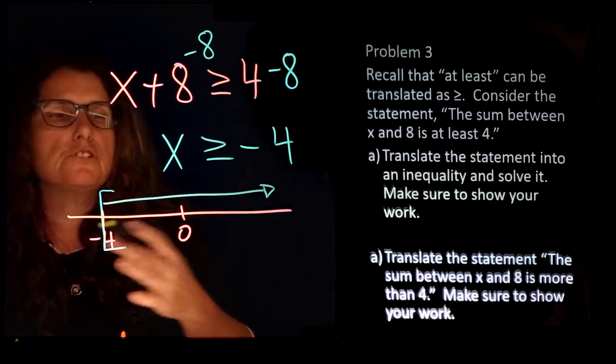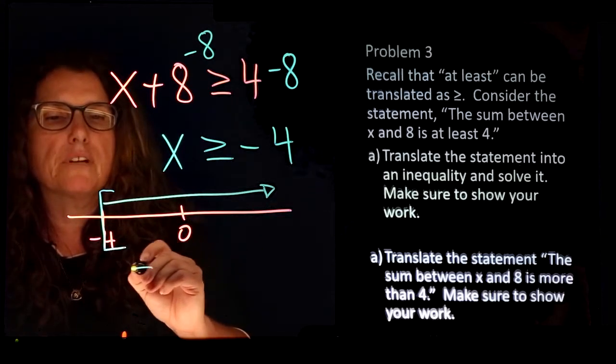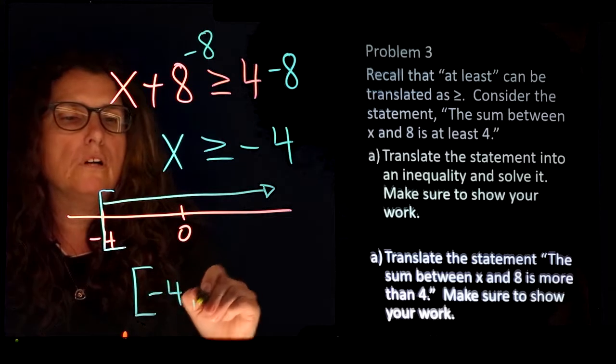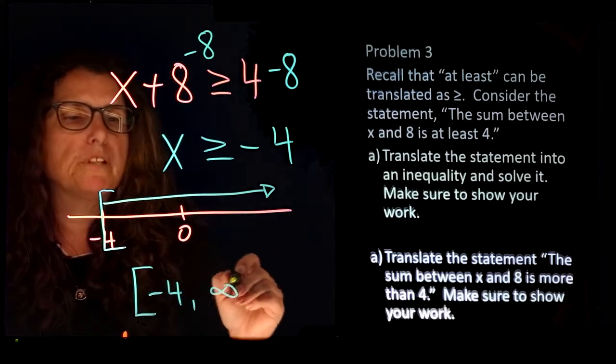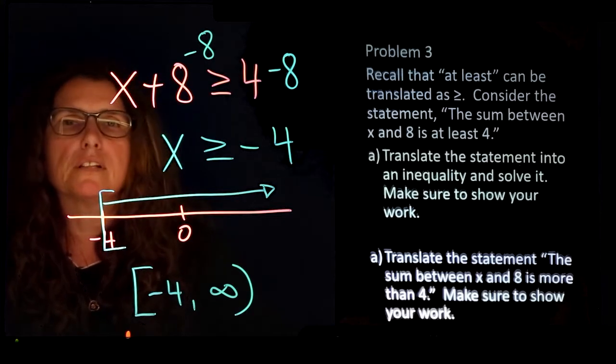For interval notation, look at your number line. Exactly as your number line shows, you write bracket negative 4, and all the way to the right would be infinity. So negative 4 to infinity with a bracket on negative 4.